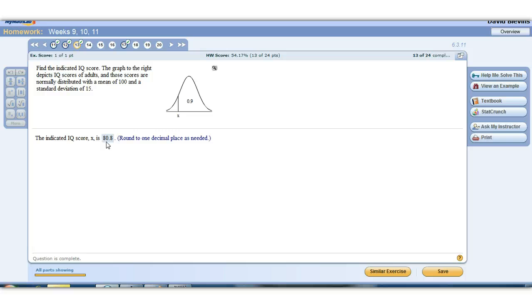Alright, so those are probability and inverse problems with the TI. No longer Z scores, but actual values from a normal distribution.